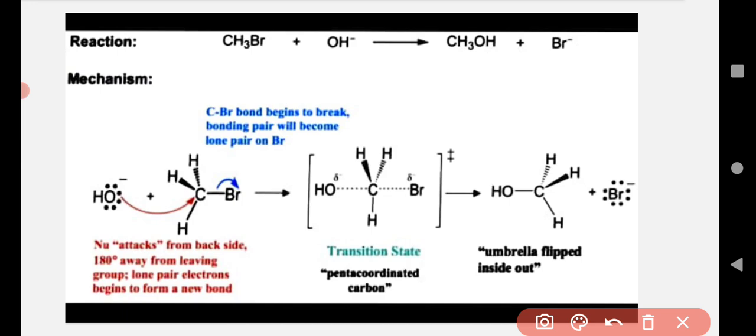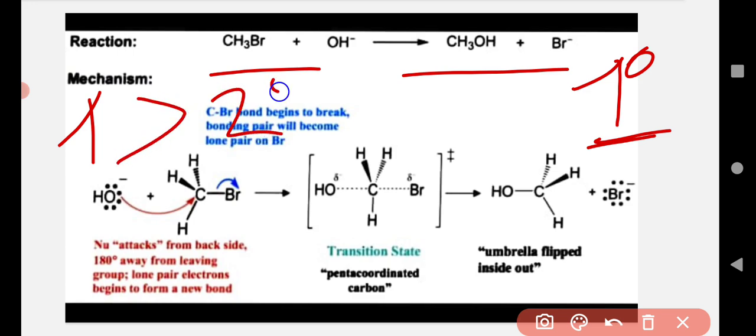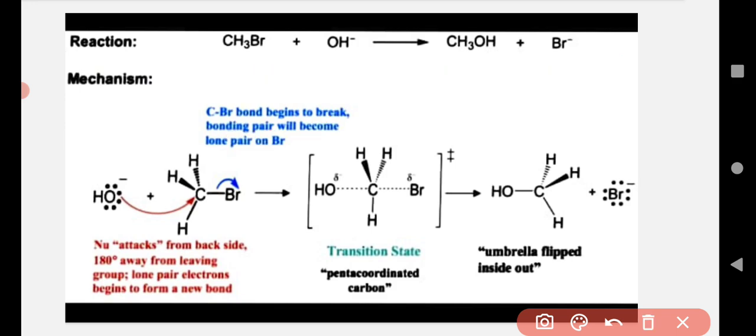This kind of SN2 mechanism is preferred for primary alkyl halides. The order of reactivity: primary alkyl halides are more reactive than secondary, then tertiary. Why? What is the reason? Because in this chemical reaction,